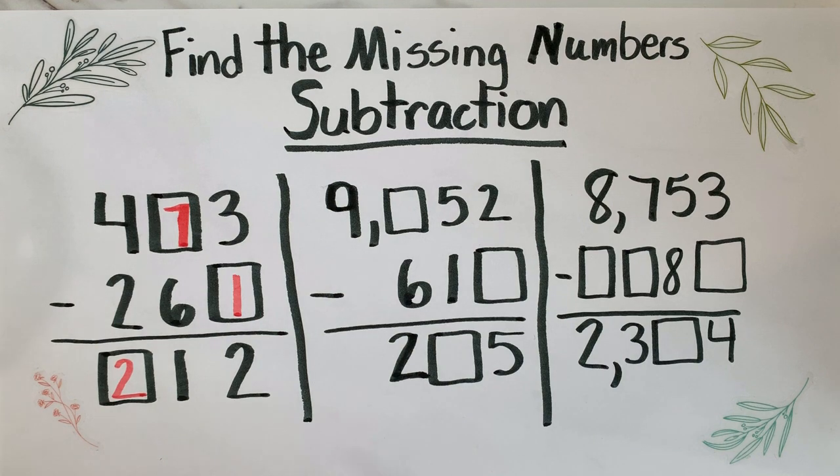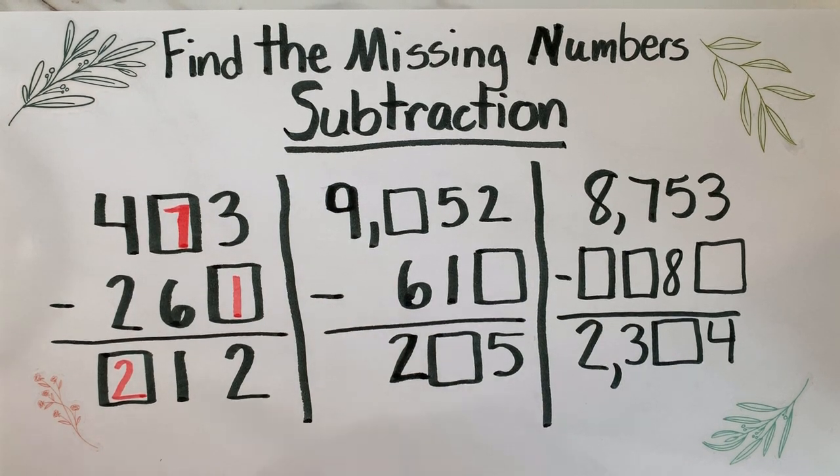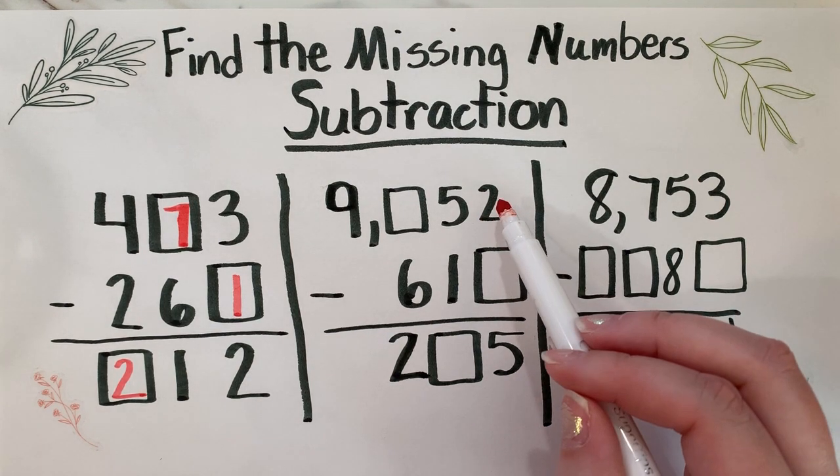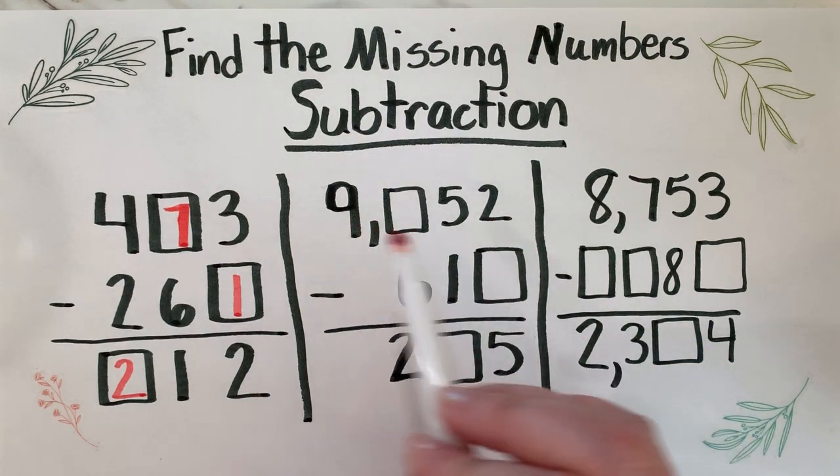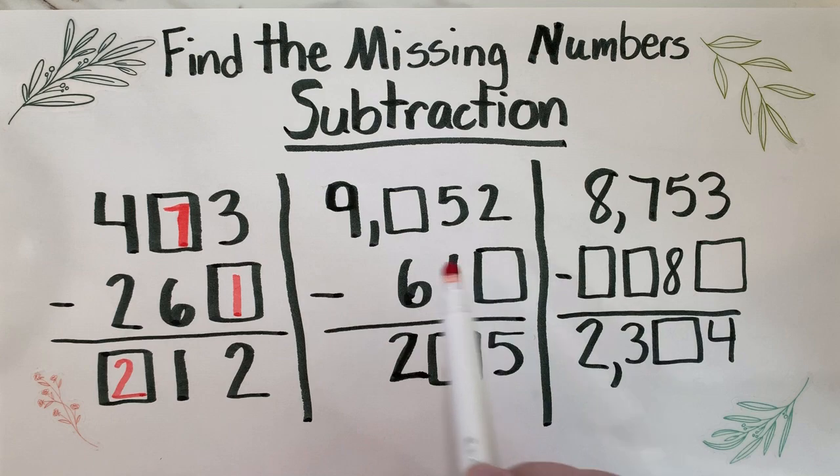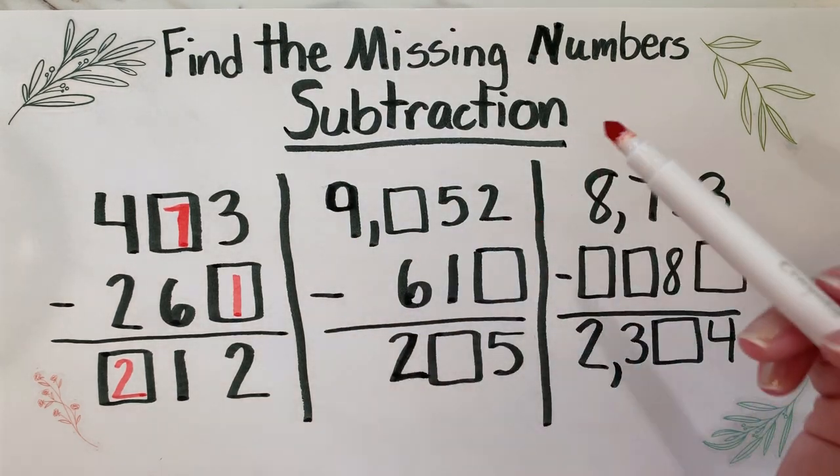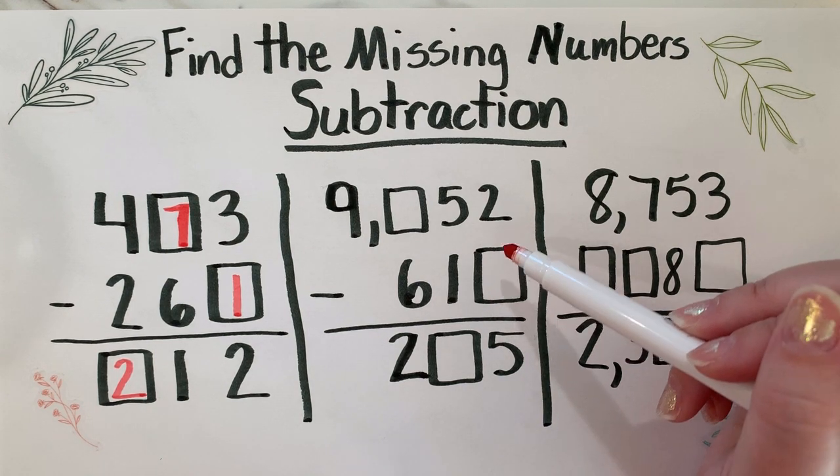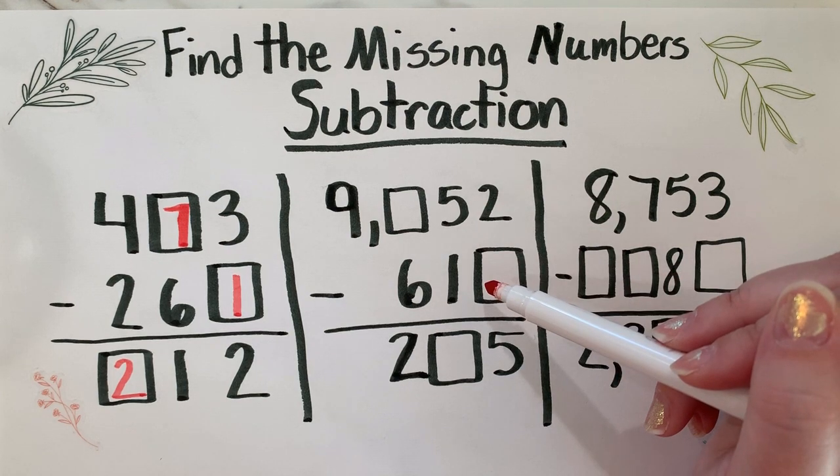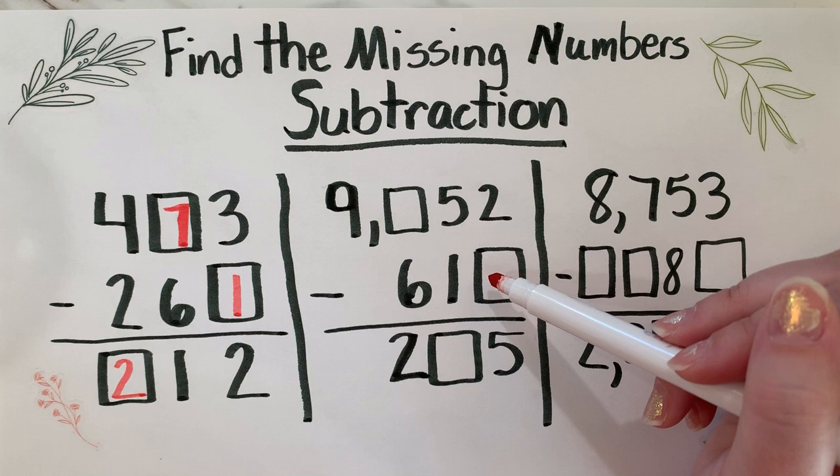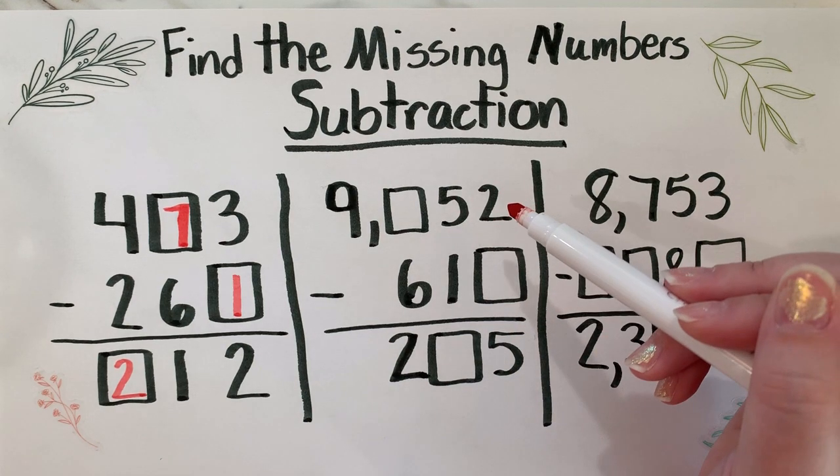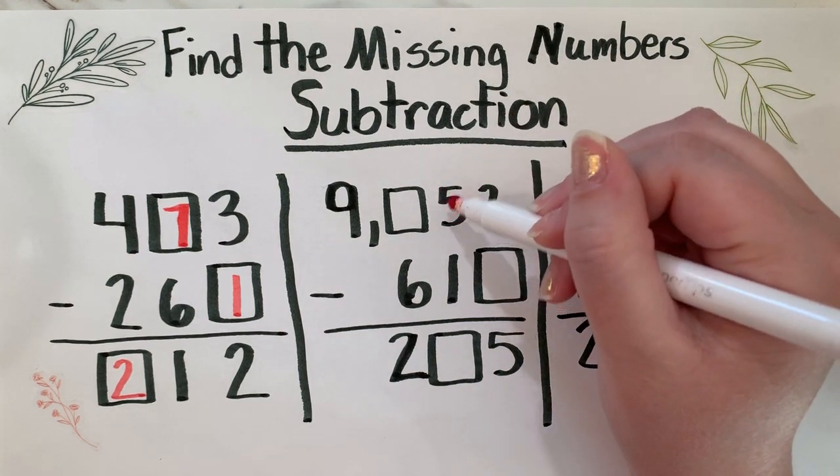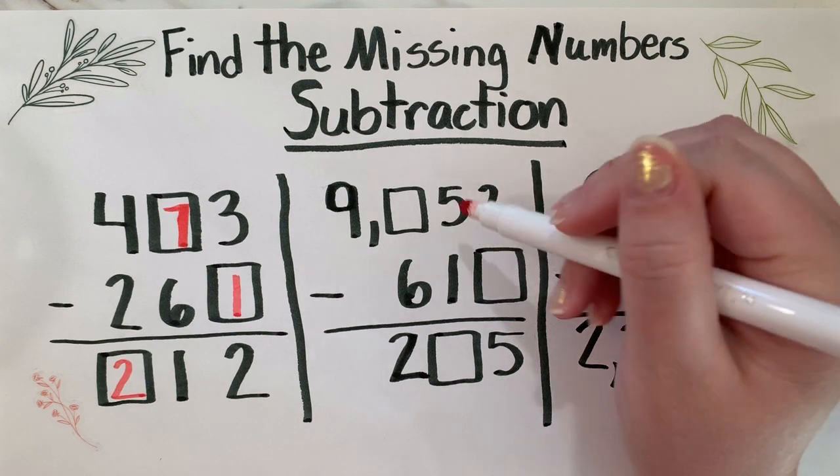If you said regrouping, you are absolutely correct. So what has to happen here is that this number has to be larger than the two. Right now, just because this number is larger than the two doesn't mean that the bottom number is bigger than the top number - you can't do that if the whole number was larger than the top number. But we can safely assume that this number cannot be zero and it cannot be one, because I don't have to regroup when I subtract those two numbers. So it has to be a number larger than two. Well, why don't we go ahead and regroup and see where that gets us?